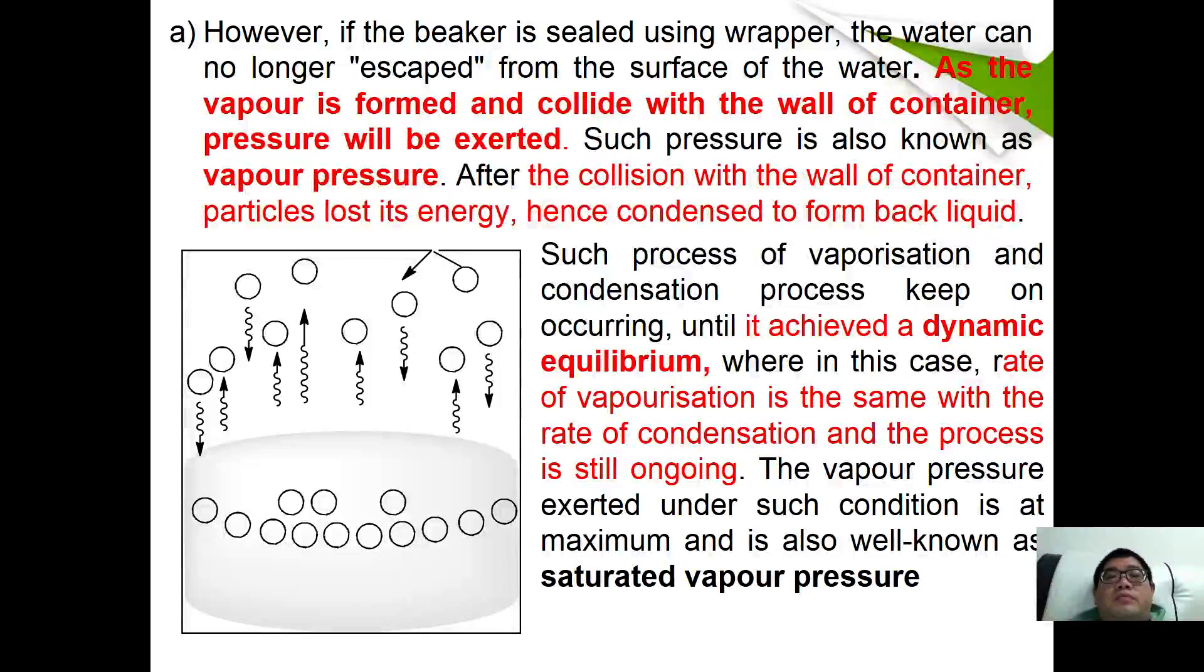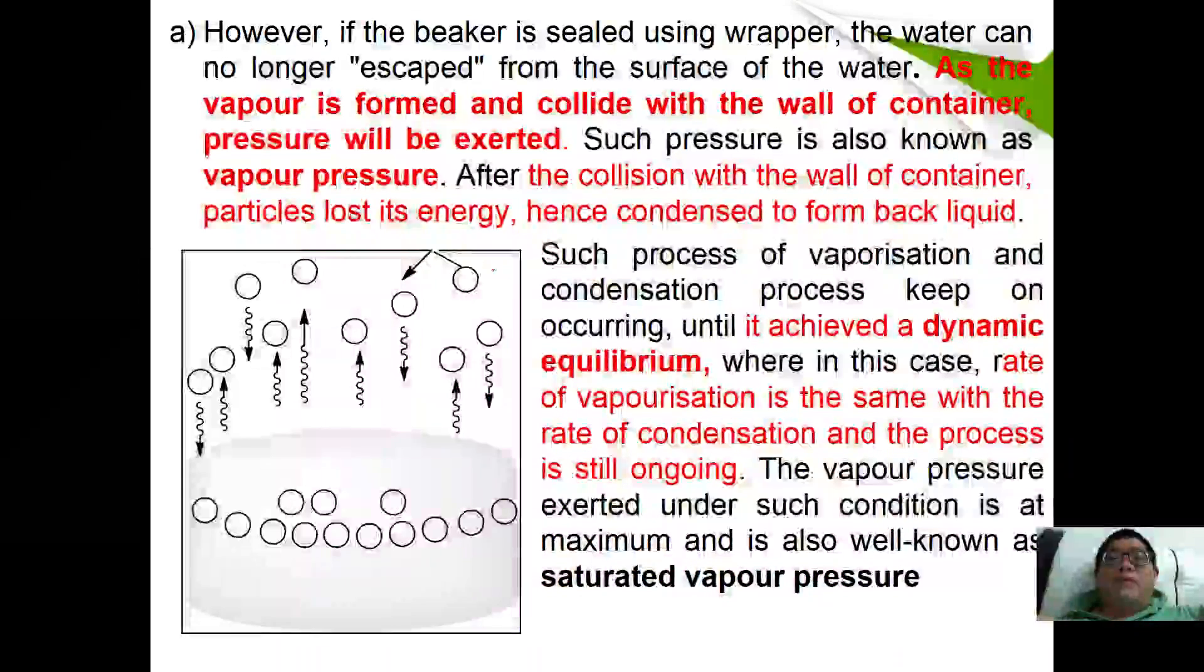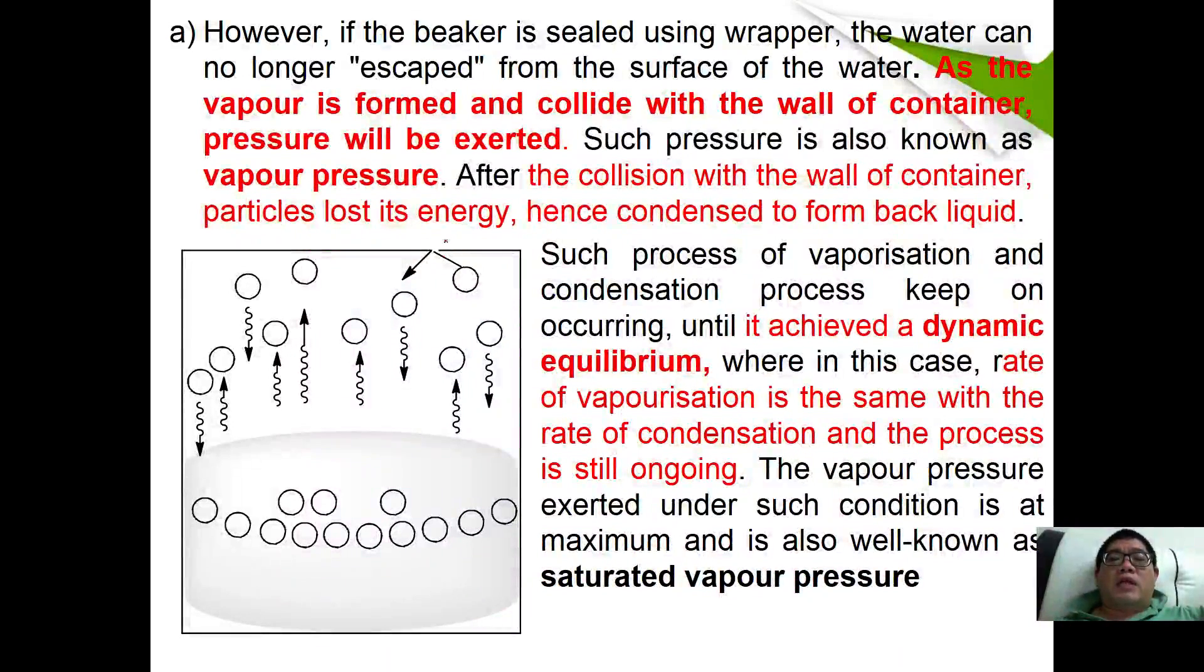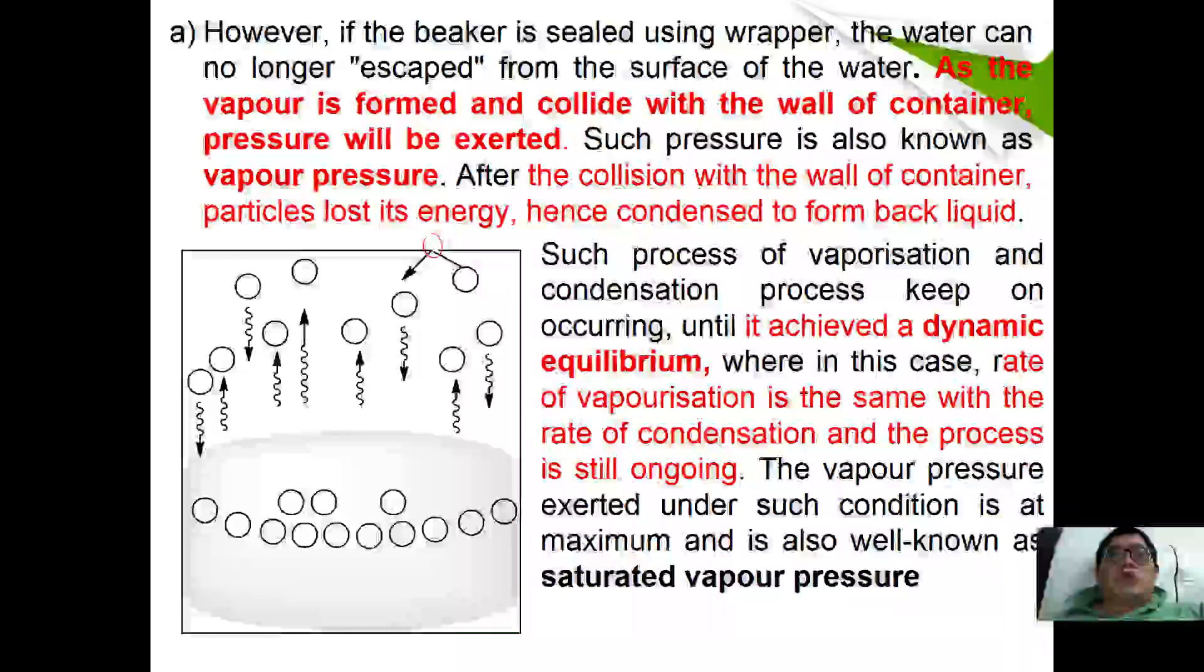However, if we seal the beaker using a wrapper, the water can no longer escape from the surface of water, that means escape out from the beaker. As a result, the water vapor collides with the wall of container and eventually exerts the form of pressure. Such pressure is also known as vapor pressure.